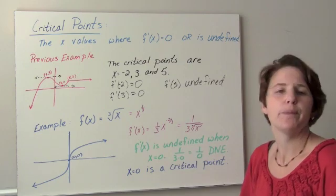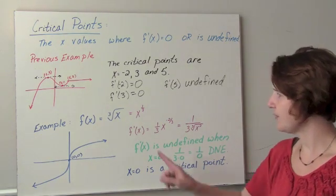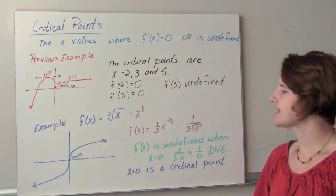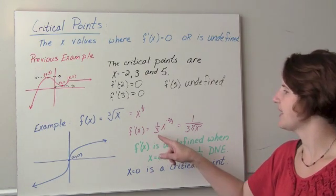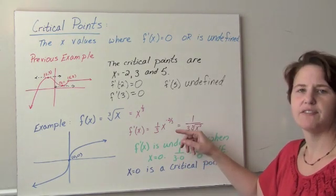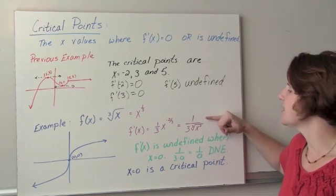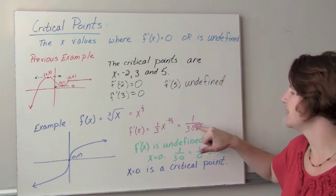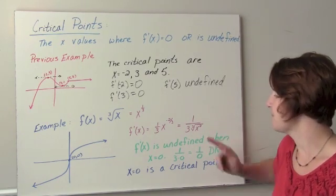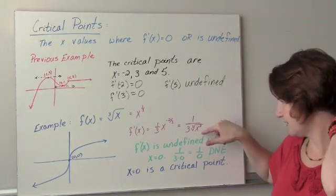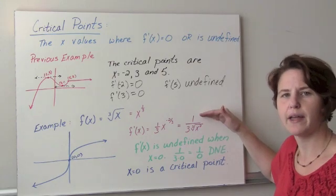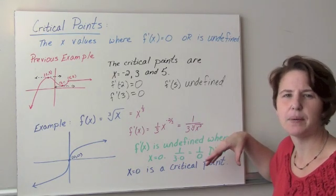Here's another example. f of x equals the cube root of x. We can rewrite the cube root of x as x to the 1/3 power. When I take its derivative using the power rule, I get f prime of x equals 1/3 x to the negative 2/3. The exponent of negative 2/3 means we come down to the denominator, so this is actually 1 divided by 3 times the cube root of x squared. This function — the derivative — is never equal to 0 because I have a fraction where the numerator is 1, and 1 divided by any number is never equal to 0.